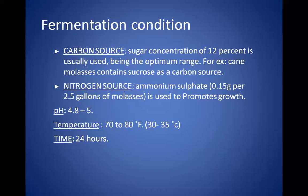For nitrogen source, ammonium sulphate at the rate of 0.15 grams per 2.5 gallons of molasses is usually used to promote growth of the organism. The pH ranges around 4.8 to 5, since acidophilic organisms — yeasts — are used. Temperature is around 70–80°F, approximately 29–35°C. The time duration takes several days, though production starts from 12 hours itself.